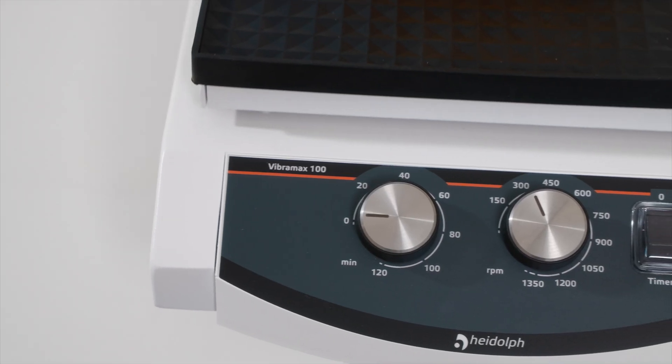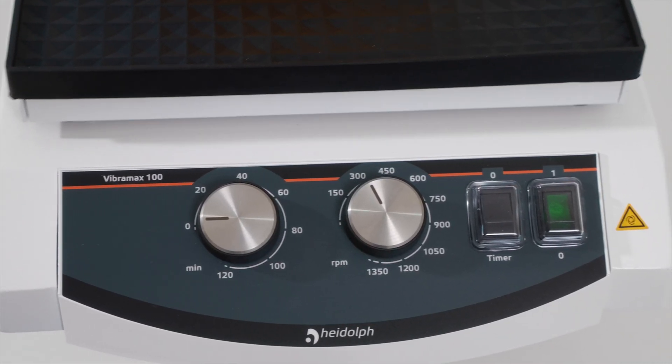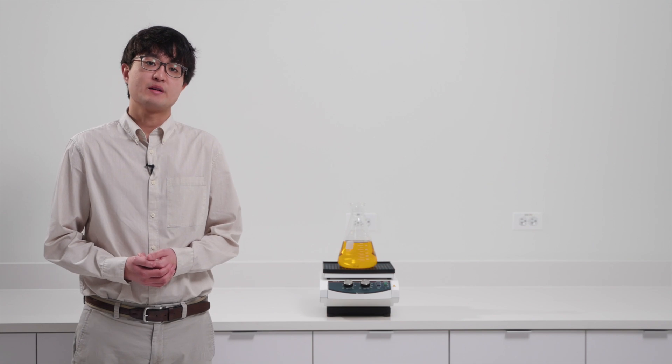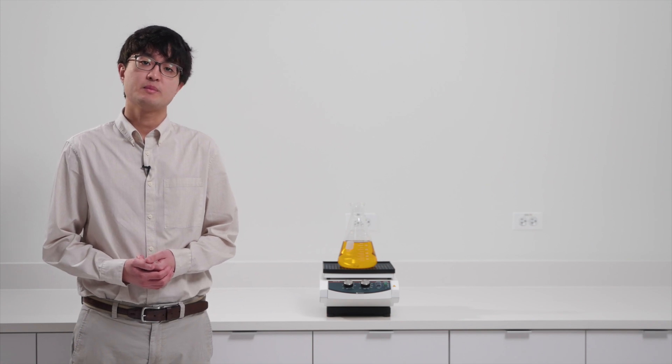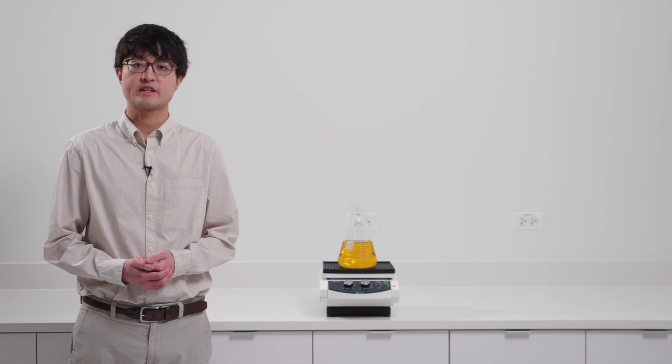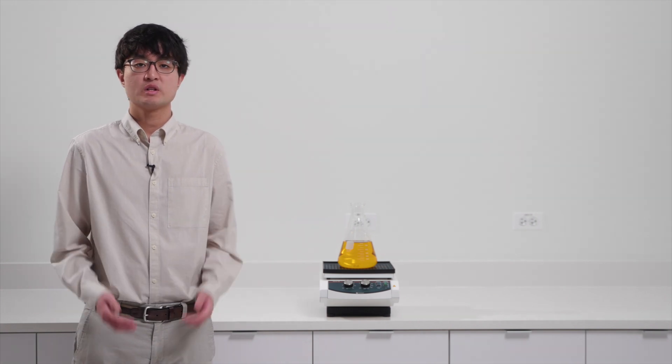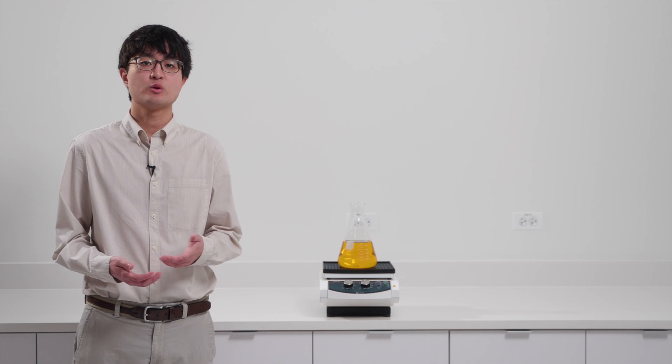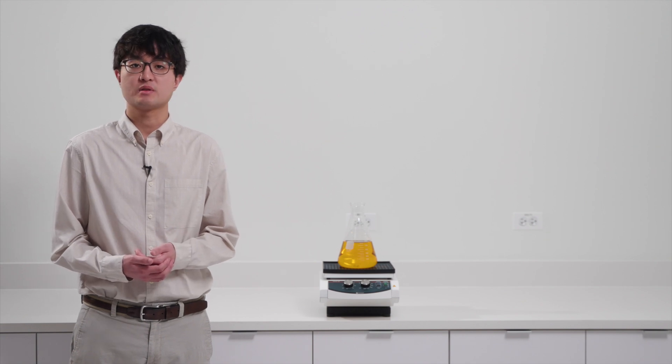Like the other three models, the Vibramax 100 comes with an integrated timer. More importantly, the Vibramax 100 comes with a 220x220 non-slip rubber mat, allowing a wide range of glassware to be securely held when in use. We also offer a tension roller attachment if you want a more secure fit for your glassware.